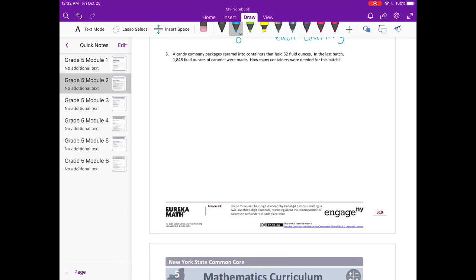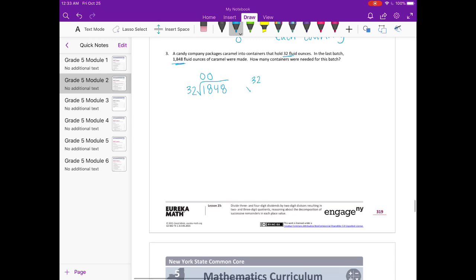A candy company packages caramel into containers that hold 32 fluid ounces. In the last batch, 1848 fluid ounces of caramel were made. How many containers were needed for this batch? So 1848 ounces into 32, equal 32 ounces in each container. So let's divide to figure out how many containers they needed. 32 can't go into 1, it can't go into 18, but it can go into 184. Let's try 5 or 6 times. 160. So if I did another 32, that's going to be too big. So it can only go in 5 times. And that was 160.